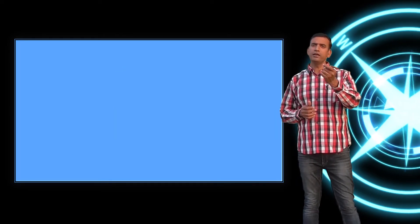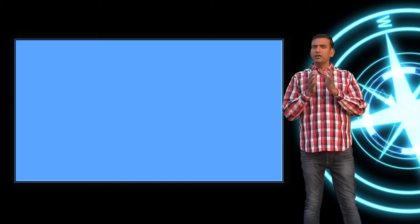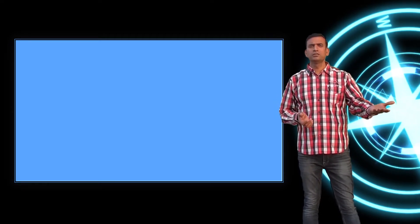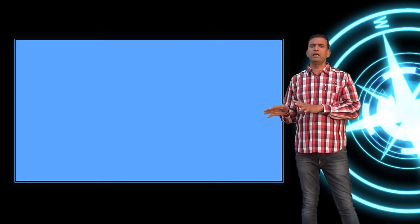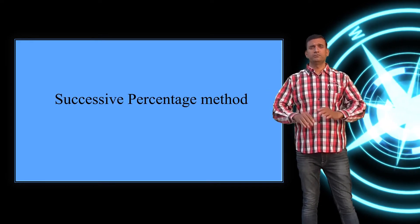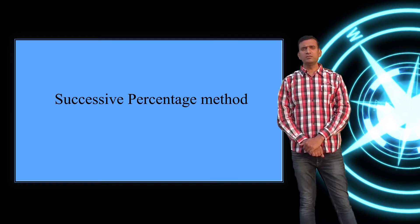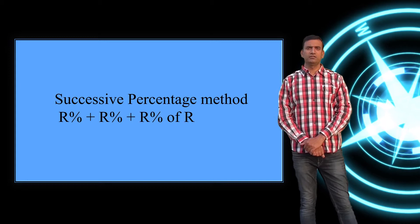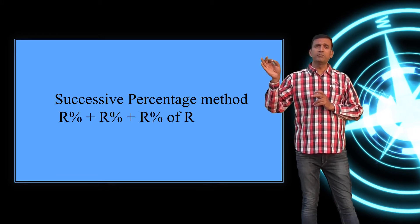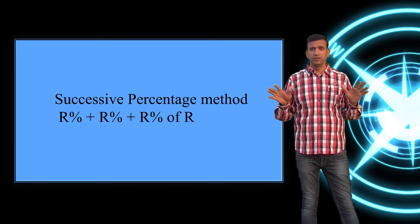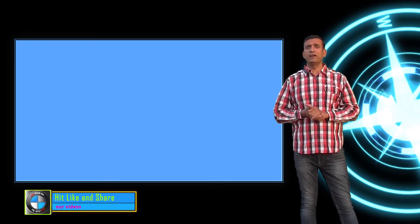For good rates — those given in integers — in competitive exams the time period is typically two, three, or four years maximum. The most common method to handle these is the successive percentage method. Using this method, the total rate is calculated as: r + r + (r% of r). So if you need the total rate, the formula is r + r + (r% of r).